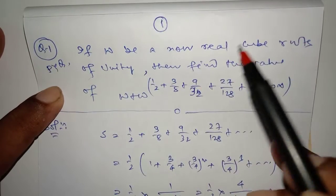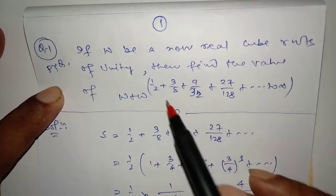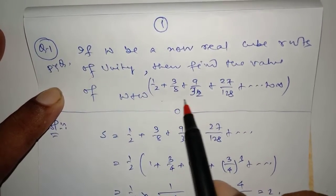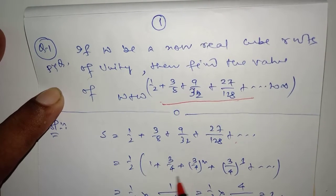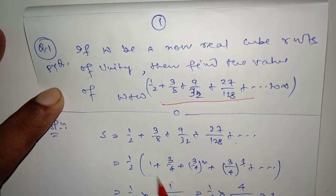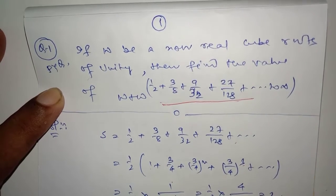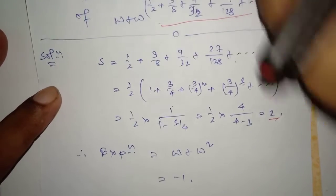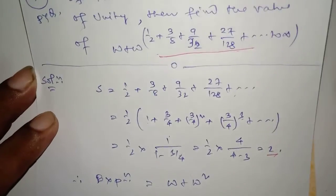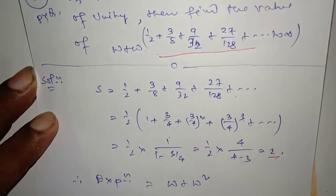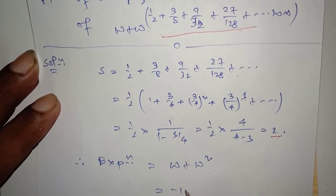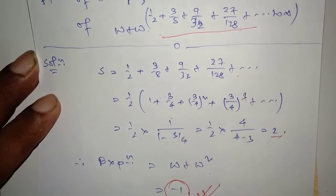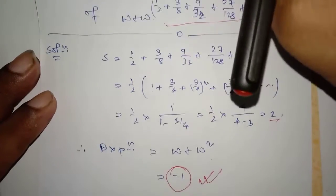If omega be a non-real cube root of unity, then find the value of this expression. Suppose A is equal to this — so this is the sum of an infinite GP. Sum of infinite GP is A divided by (1 minus R). A is 1, so simplify: that is 2. Put this into the expression — this gives omega squared equal to omega plus omega squared. We know 1 plus omega plus omega squared equals 0, so the value is minus 1. This is very important for JEE Mains.